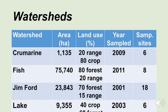Jim Ford Creek is in Clearwater County — 23,800 hectares in size, 70% forest land, 15% rangeland. It was sampled in 2001 and there were actually 18 different sampling sites in this watershed.